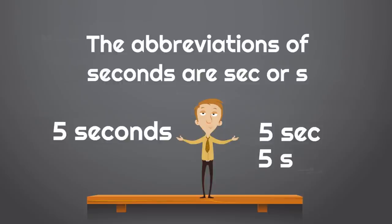Here's another example. Five seconds could be written five sec or five s. Now, you don't always have to do that. You don't always have to use an abbreviation. But if you want to abbreviate and make seconds shorter, you can just write five sec or five s.